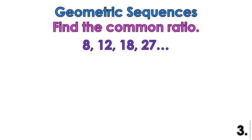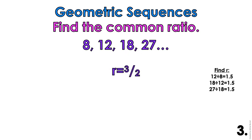Number 3: the sequence is 8, 12, 18, 27. I'm going to take 27 divided by 18, 18 divided by 12, and 12 divided by 8, and I get 1.5 or 3 halves. Both are acceptable answers, so the common ratio is 3 over 2 or 1.5 — they are the same thing.